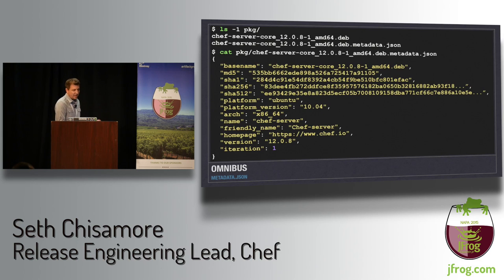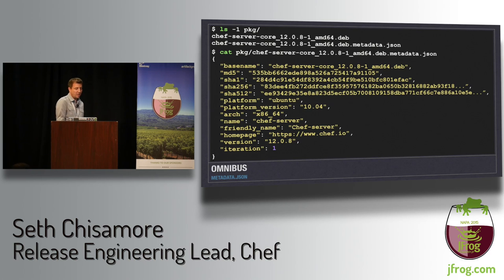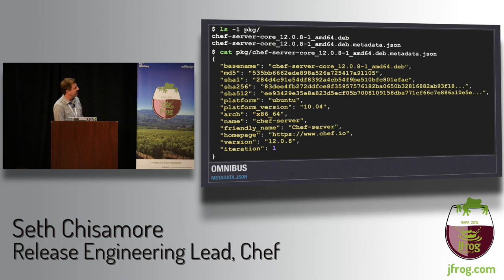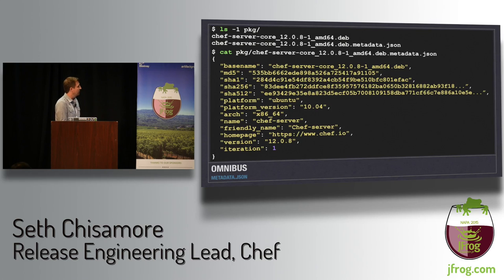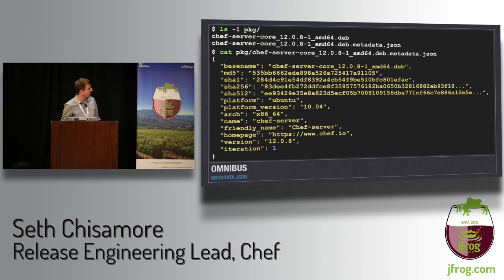In addition to the binary artifact produced by the build, Omnibus also produces a JSON file full of metadata describing the artifact. It's named similarly but with a .metadata.json extension. Inside: four types of checksums, the platform version, architecture, name, version, and iteration. This metadata is really useful at later stages of our pipeline.